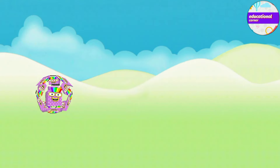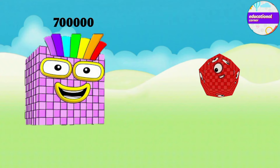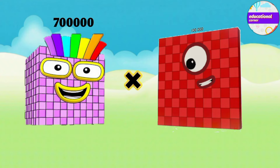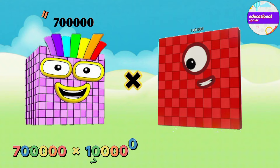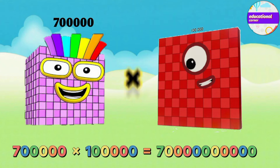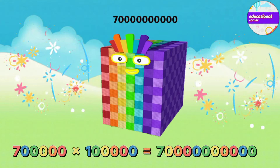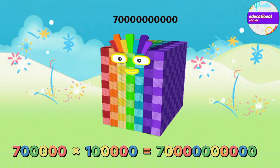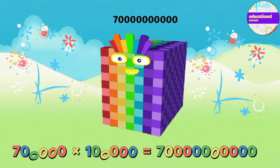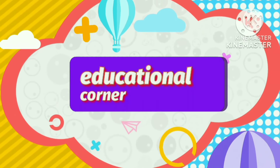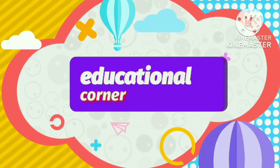Seven hundred thousand multiply by one hundred thousand equals seventy billion.